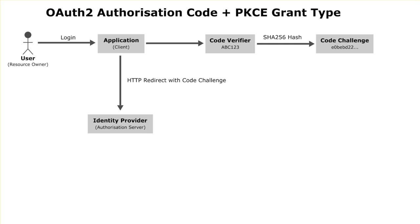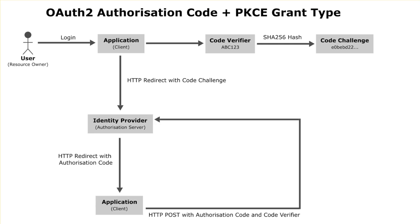The application then redirects the user to the identity provider with the code challenge hash. The authorization server persists that code challenge temporarily and returns the user back to the application with the authorization code. Once the application gets the authorization code, it sends the authorization code in an HTTP POST back to the identity provider, specifying the code verifier. It's safe to send the plain text code verifier because it's an HTTP POST and will be protected over TLS.